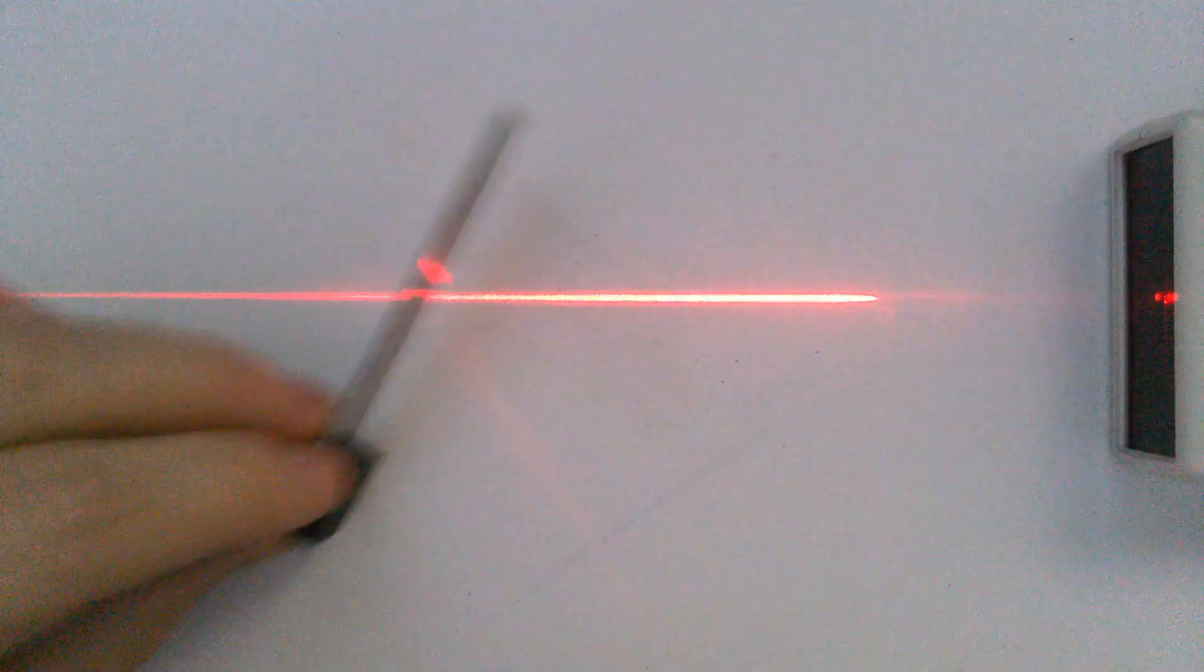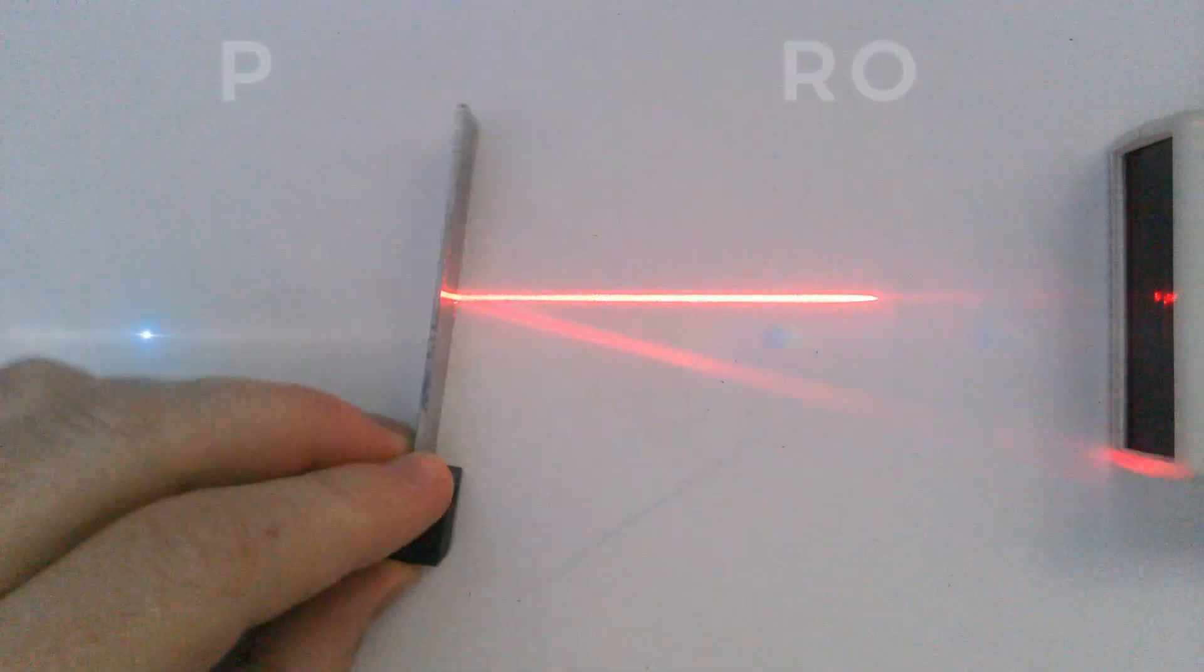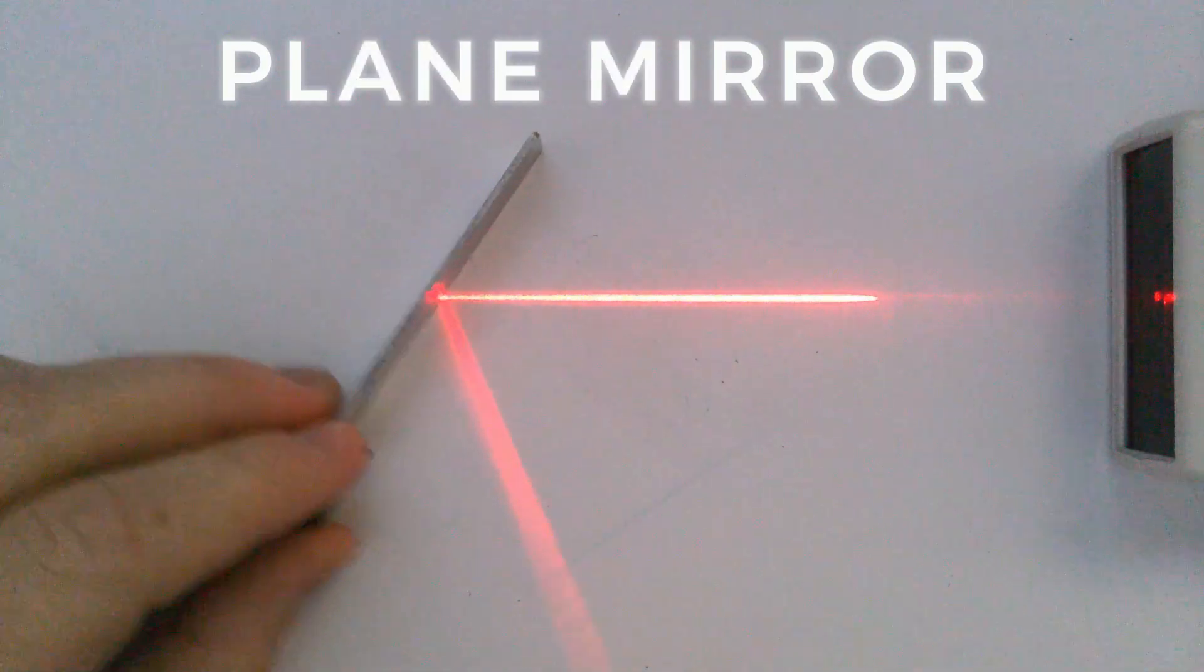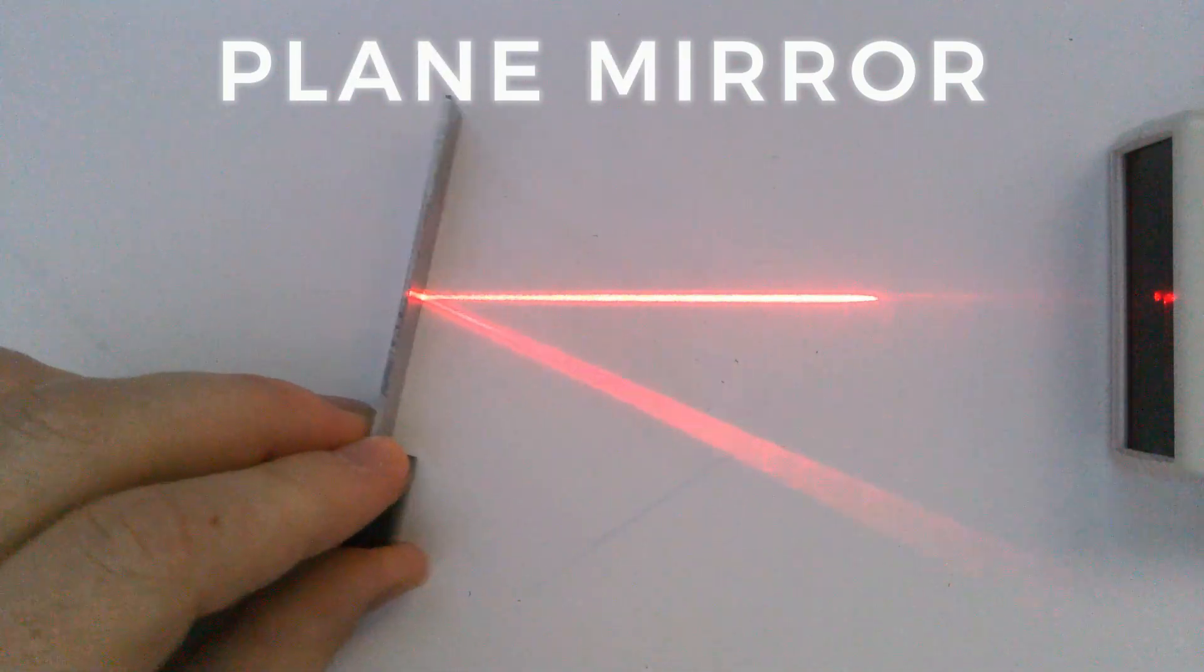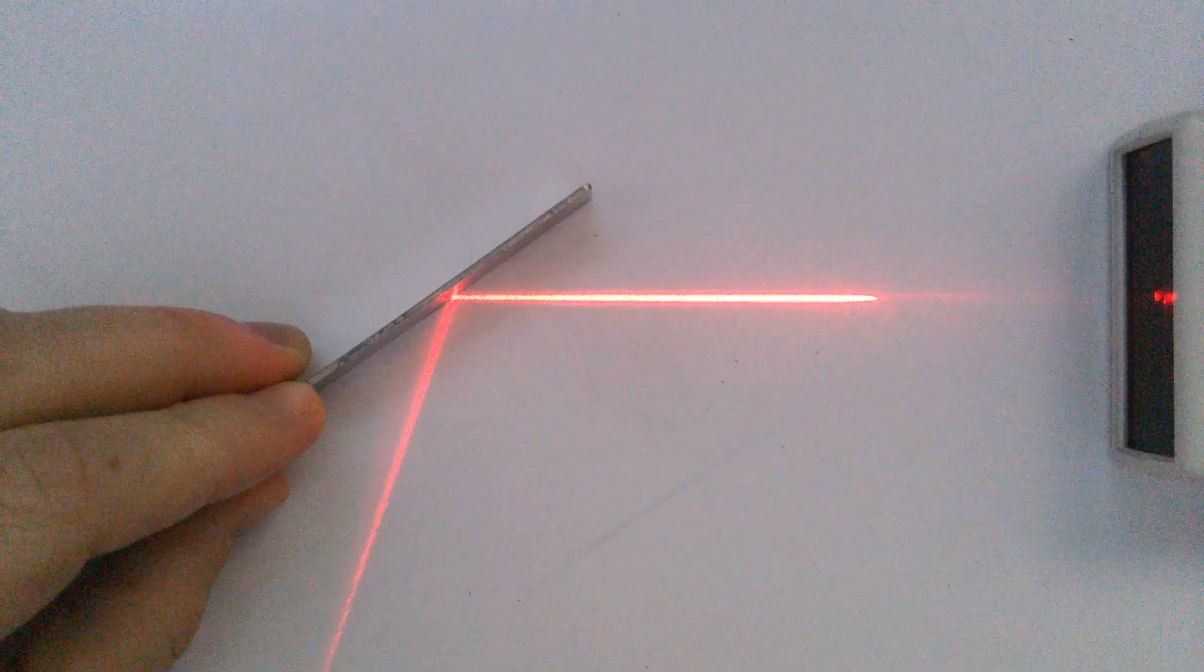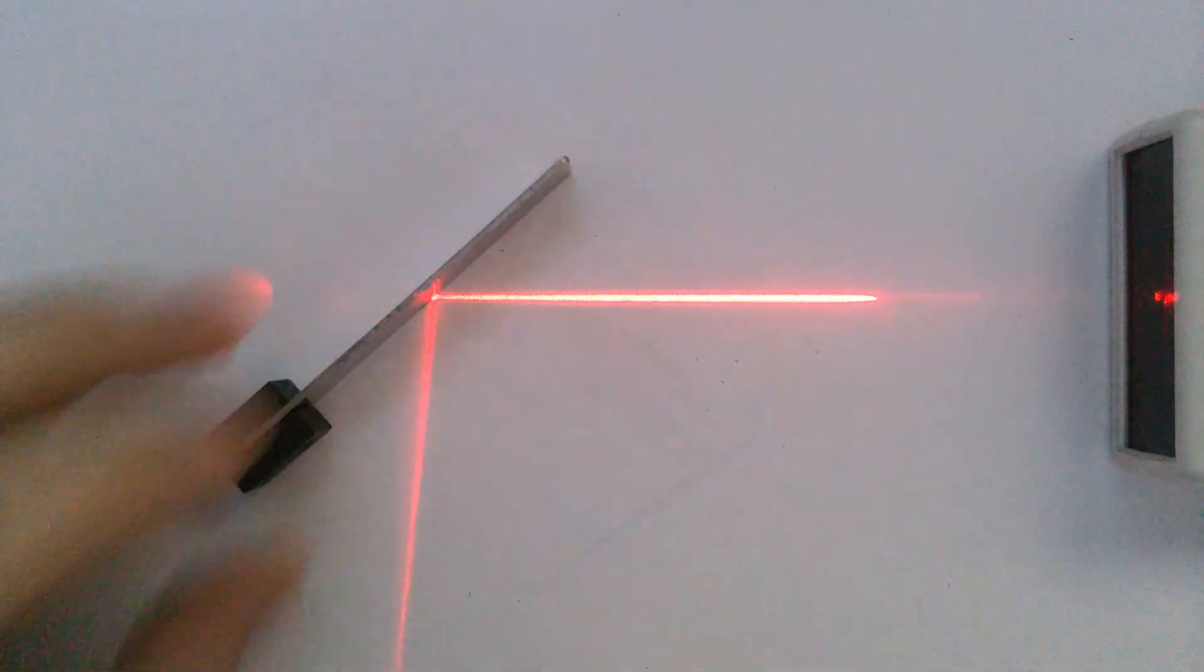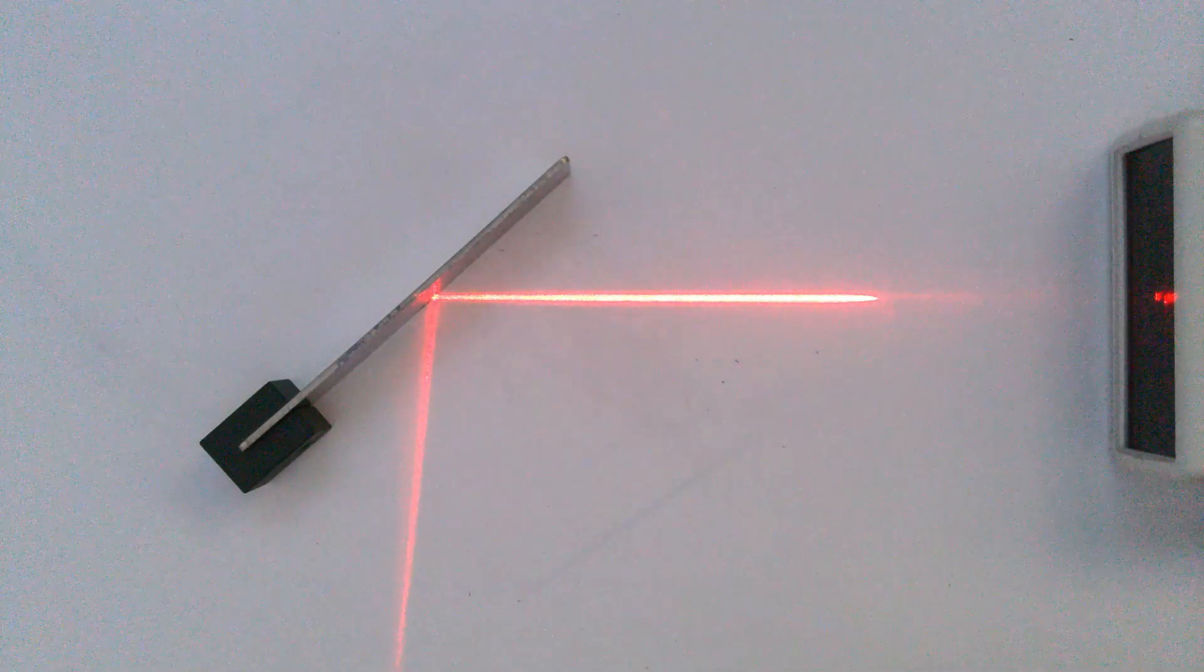So here I've got a light ray, a laser, coming in to hit a mirror. And when it hits the mirror, we can hopefully see that as I angle and rotate the mirror, the ray is being reflected away from it in the same angle that it's coming in.